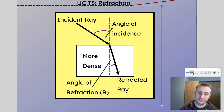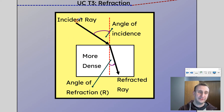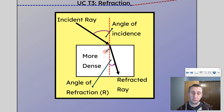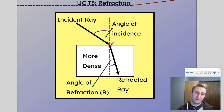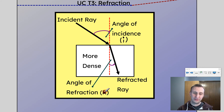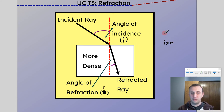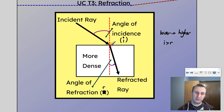Let's look at a diagram. Here we have an incident ray coming in from a less dense medium — let's say air — to a more dense medium, like water or glass. As the incident ray hits the new medium and transfers to the more dense medium, it ends up curving towards the normal. You can see that the angle of incidence is much larger than the angle of refraction. We normally show the angle of incidence with a lowercase i, and the angle of refraction with a lowercase r. So i is going to be greater than r when moving from lower to higher density.